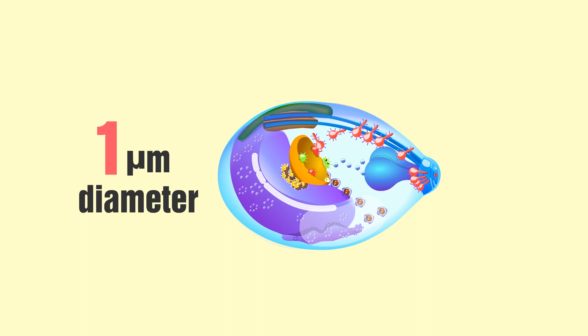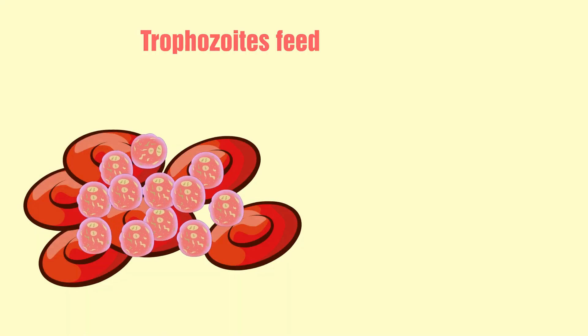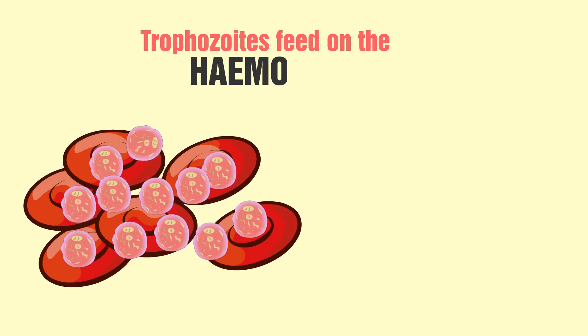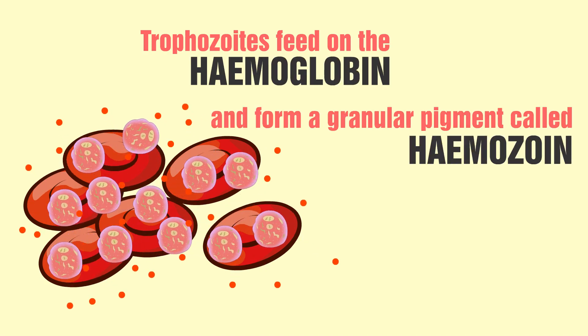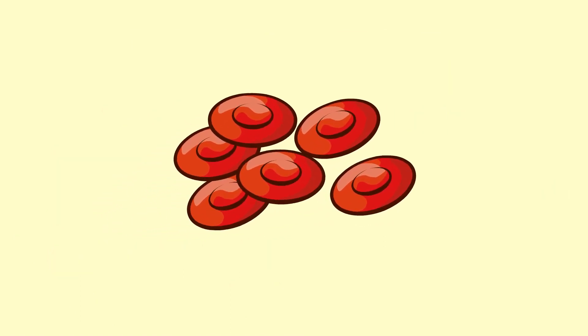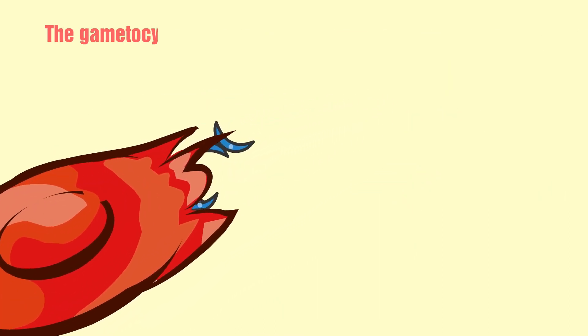Each schizont produces merozoites, each of which is roughly 1.5 micrometers in length and 1 micrometer in diameter. In the erythrocyte, the merozoite forms a ring-like structure, becoming a trophozoite.